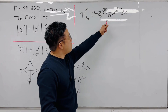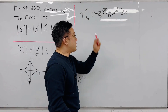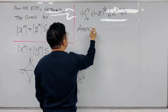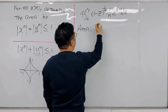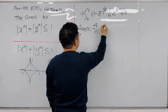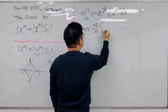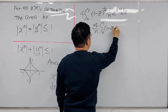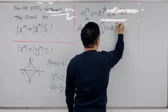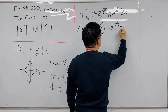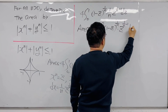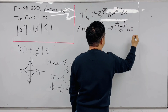We can pull the 1/n outside. So the area is 4/n times the integral from 0 to 1 of (1 - z)^(1/n) × z^(1/n - 1) dz.